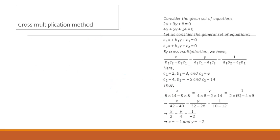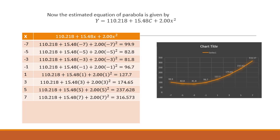Here I explain the cross multiplication method. This example is not related to our problem, but the method is. I have used cross multiplication here. You already know this method from your algebra and mathematics course, so I will not explain it in detail as it would take a lot of time. From this method we have estimated the values of a, b, and c.